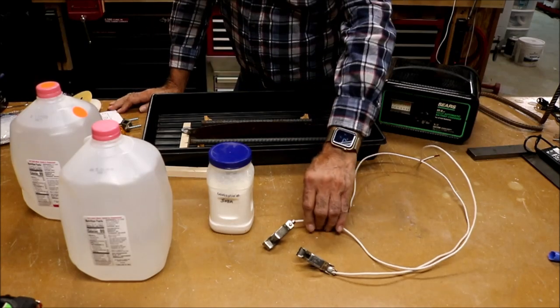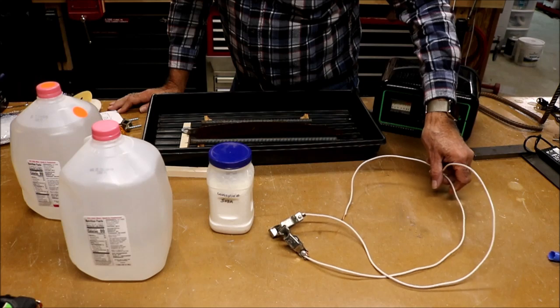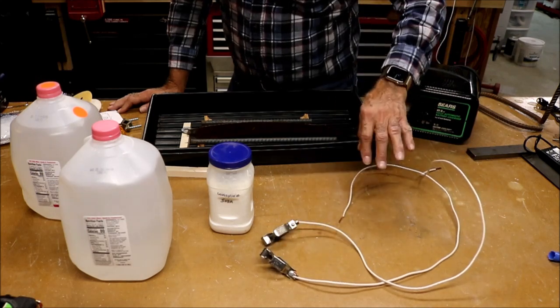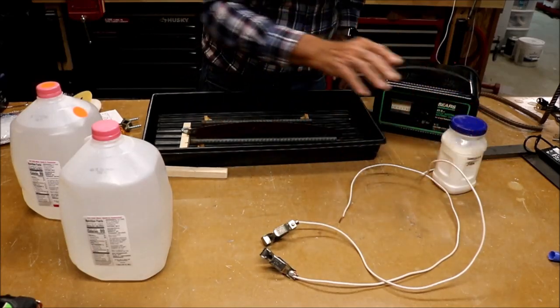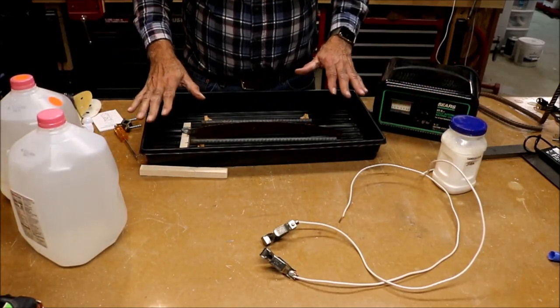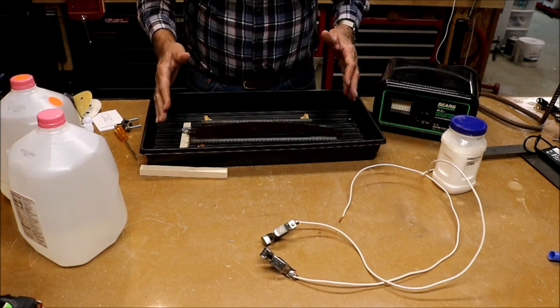Then you'll need some clips to make the connections to the electrodes that we're going to use inside here. This is the tray that I'm using. It's a seed starting tray. You can use a glass tray. You can use a plastic bucket.